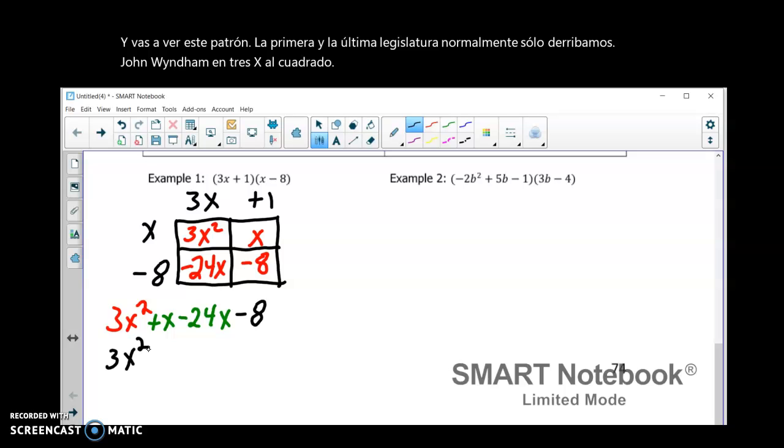Signs are different. So, I'm going to subtract them. Keep the sign of the bigger number. 24 is bigger. So, it's going to be negative. 24 minus 1 is 23. And bring down my minus 8.